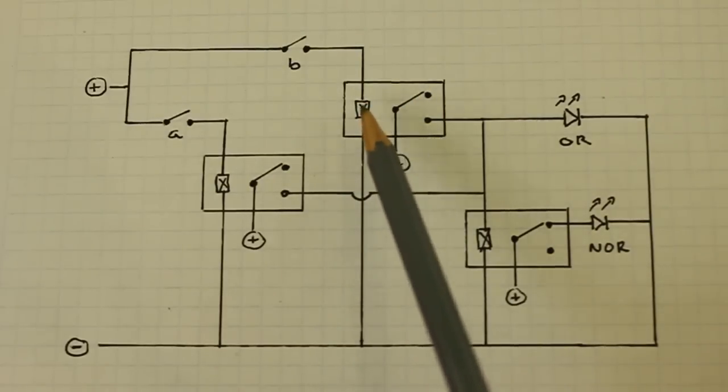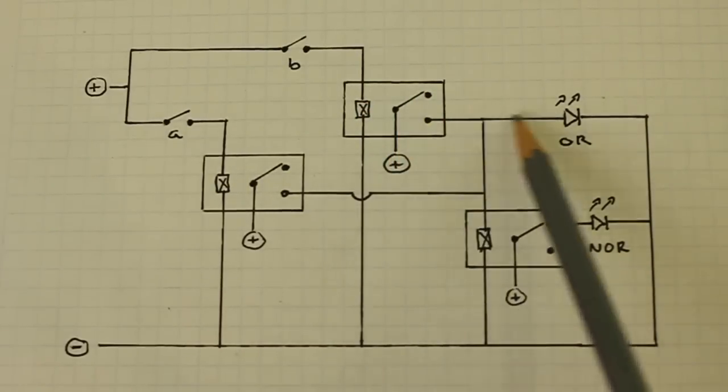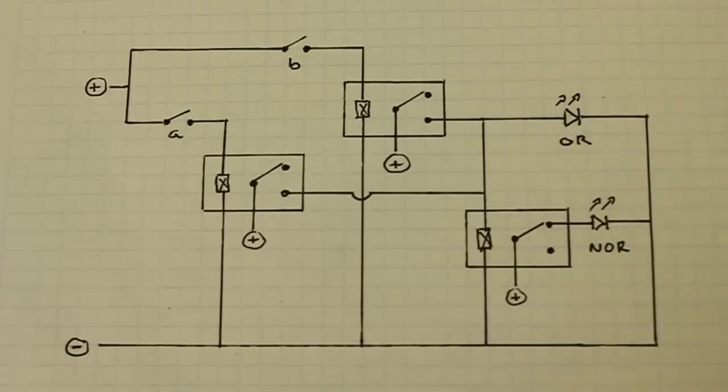This relay is energized. The contact moves to this position and the current flows through the OR LED and also this other relay is energized and this contact moves.